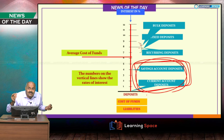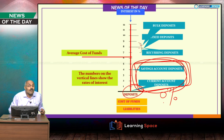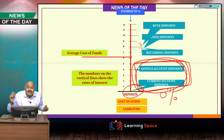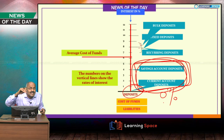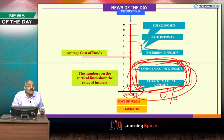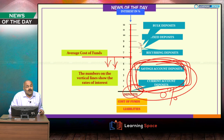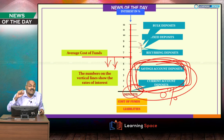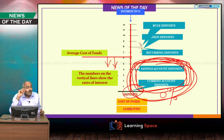When current and savings deposits are more, the average cost of funds comes down and profitability for banks increases. We discussed the disadvantage of having too much of this as well. Up to a certain limit, it is fine. A similar type of question will appear in discussions we are going to take up in the month of May, and it will be very clear at that time.